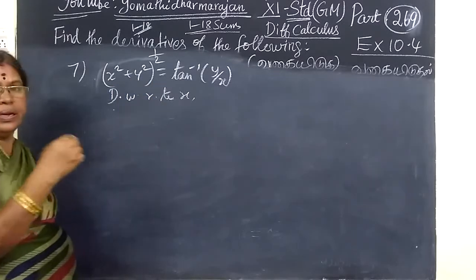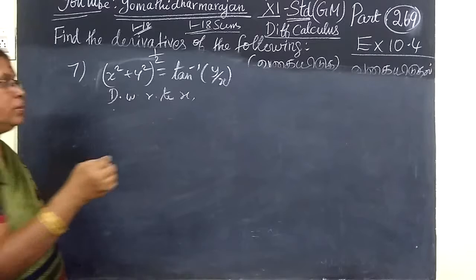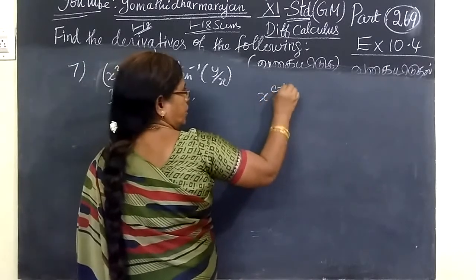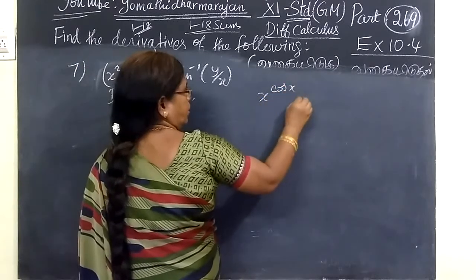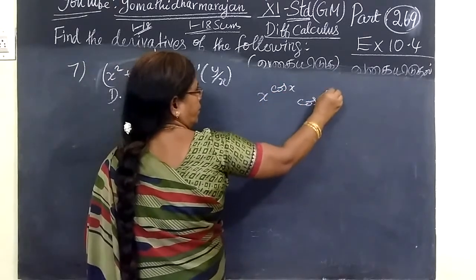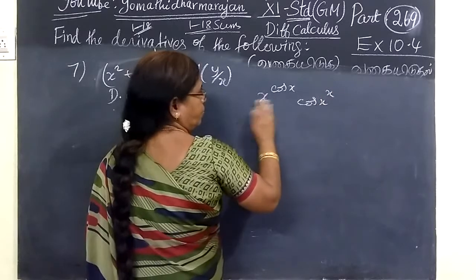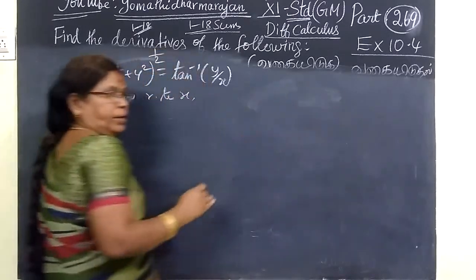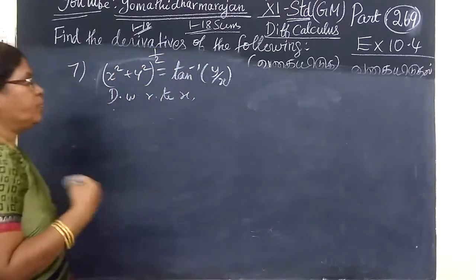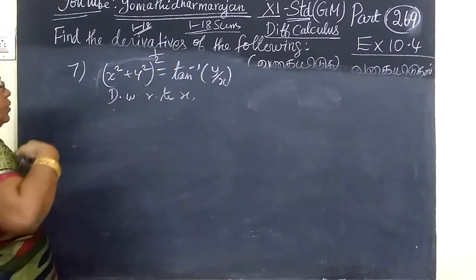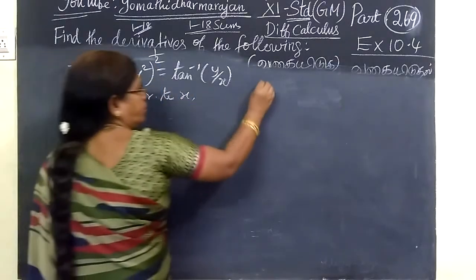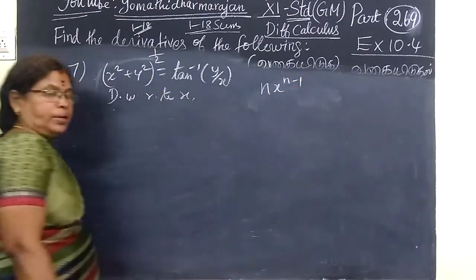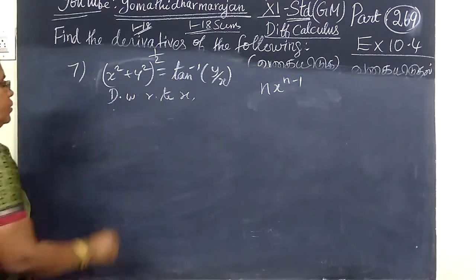When you will take log with x power cos x, that is cos x power x, you will try to take log with 4. In here will be n into x power n minus 1 — this is the formula — n into x power n minus 1.